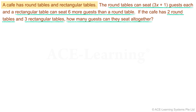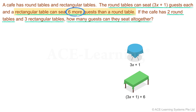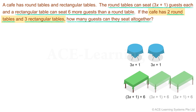There are two types of tables in the cafe: round and rectangular. Each round table can seat 3x plus 1 guests. Each rectangular table can seat 6 more guests than a round table, meaning each rectangular table can seat 3x plus 1 plus 6 guests. The cafe has 2 round tables and 3 rectangular tables. We have to find the seating capacity of this cafe.